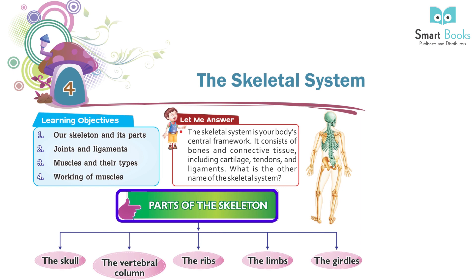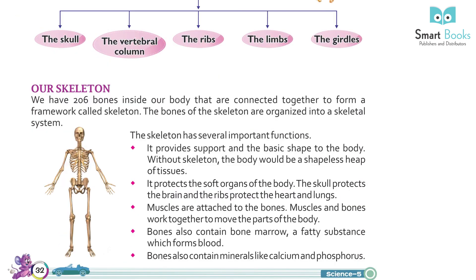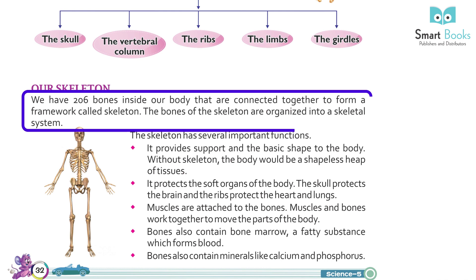Parts of the skeleton: the skull, the vertebral column, the ribs, the limbs, and the girdles. We have 206 bones inside our body that are connected together to form a framework called the skeleton. The bones of the skeleton are organized into a skeletal system.